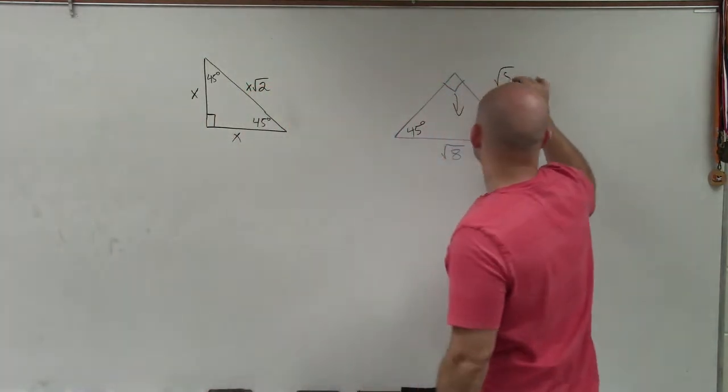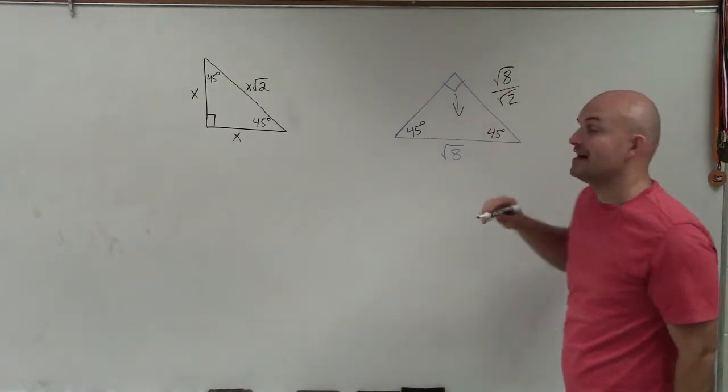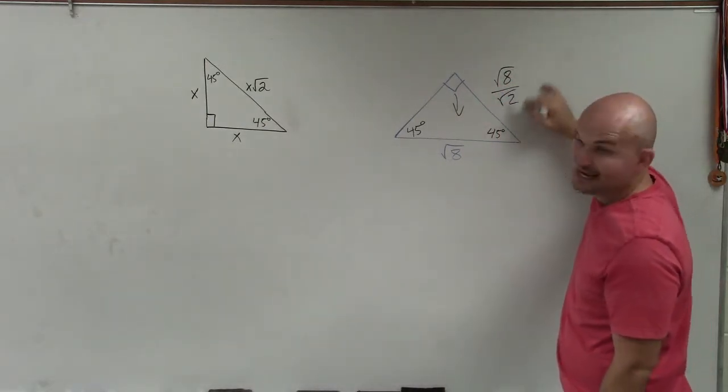So all I simply do is take the square root of 8 divided by the square root of 2. When we're dividing radicals, you just divide into the radicands.